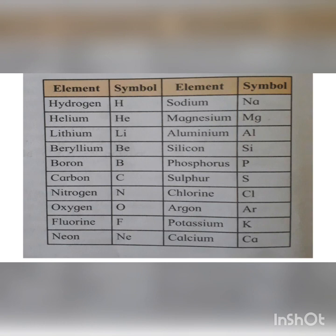There is a table with elements and symbols on page number 94. Reading through: Hydrogen — H; Helium — He; Lithium — Li; Beryllium — Be; Boron — B.